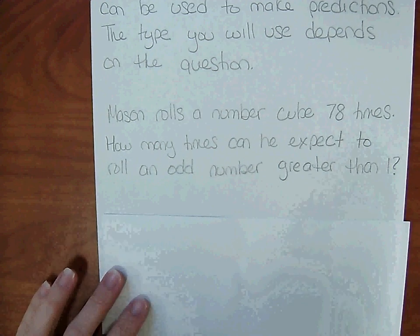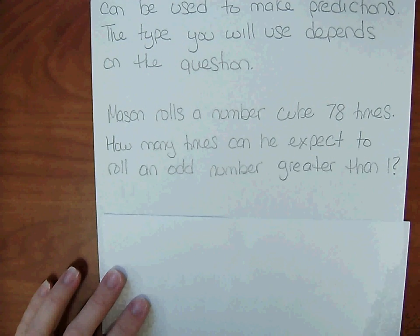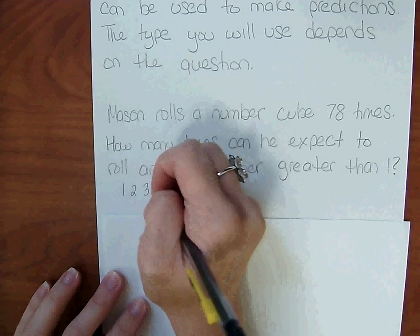The sample space for a number cube is 1, 2, 3, 4, 5, 6.